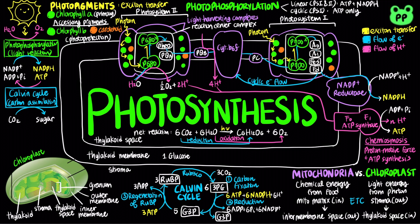Glucose is generated from two molecules of glyceraldehyde 3-phosphate during gluconeogenesis. Therefore, each glucose requires two rounds of the Calvin cycle involving six carbon dioxide, 18 ATPs, and 12 NADPH.